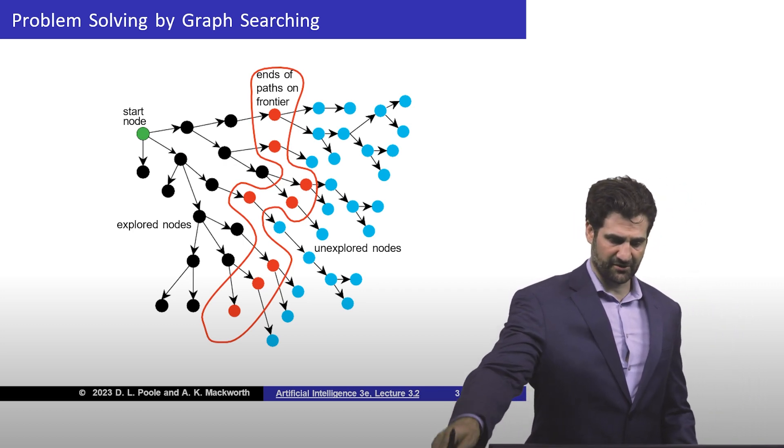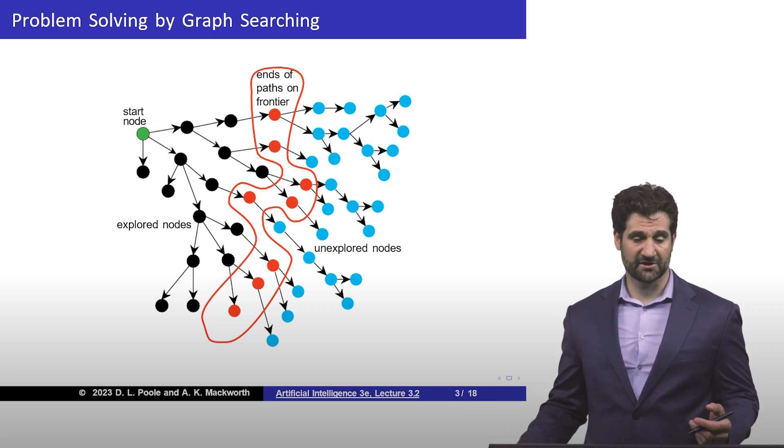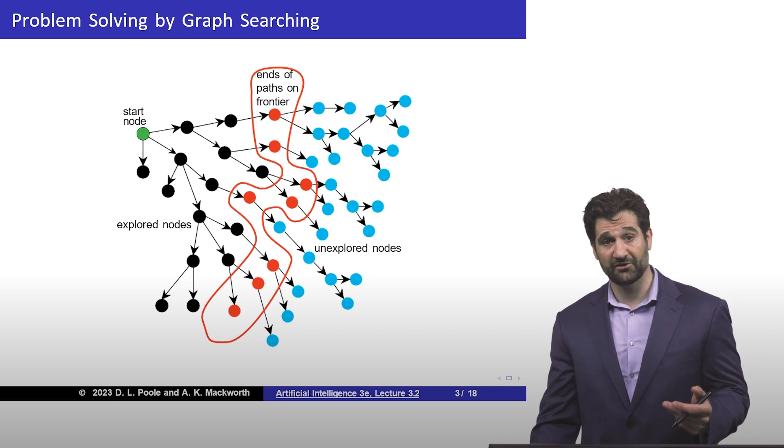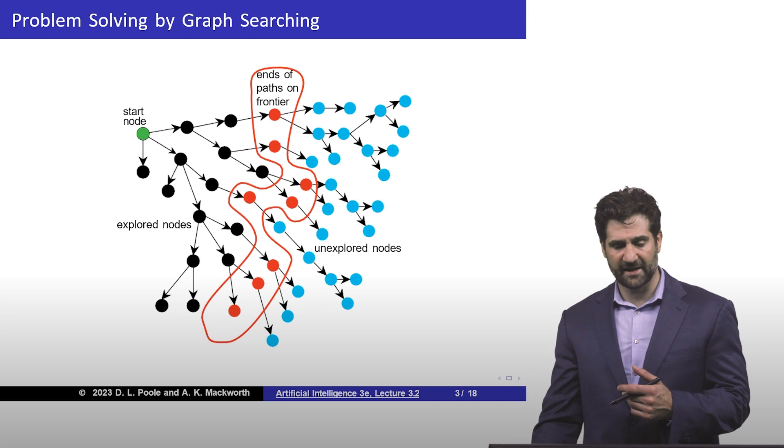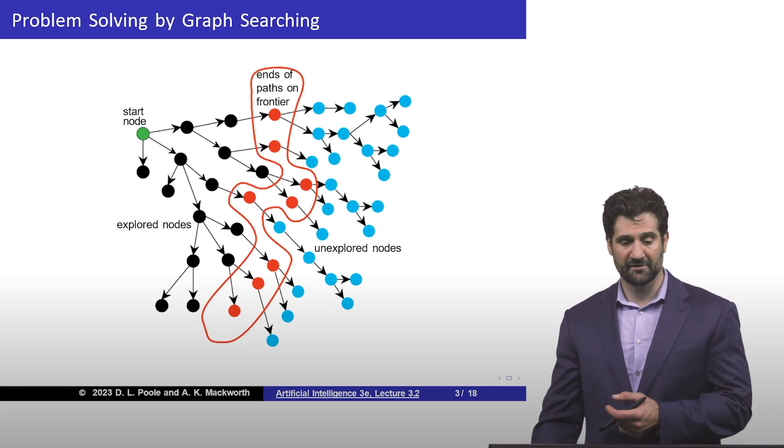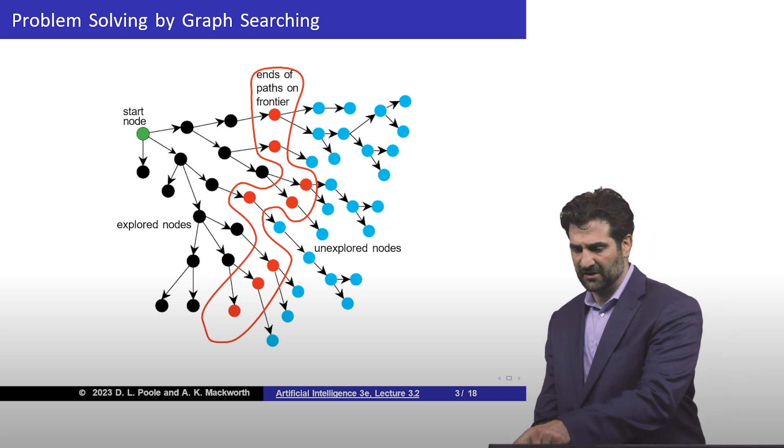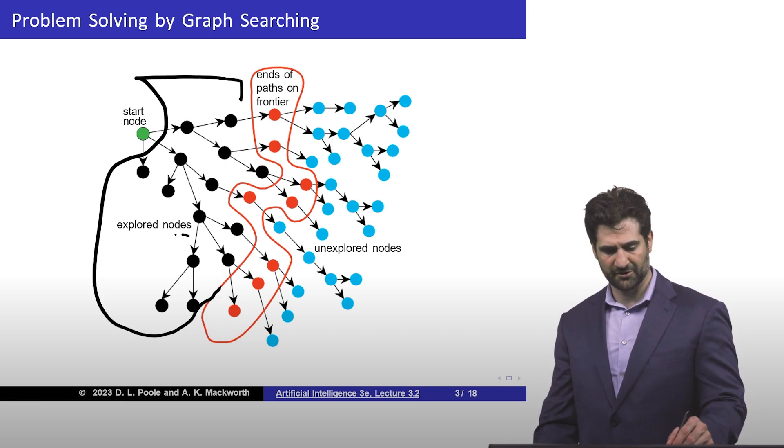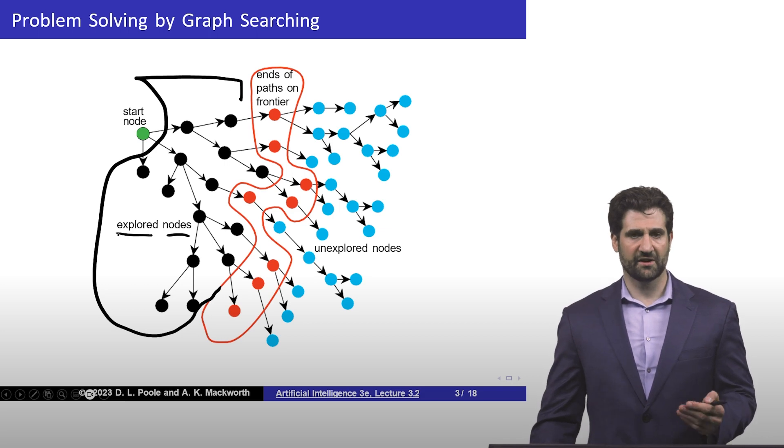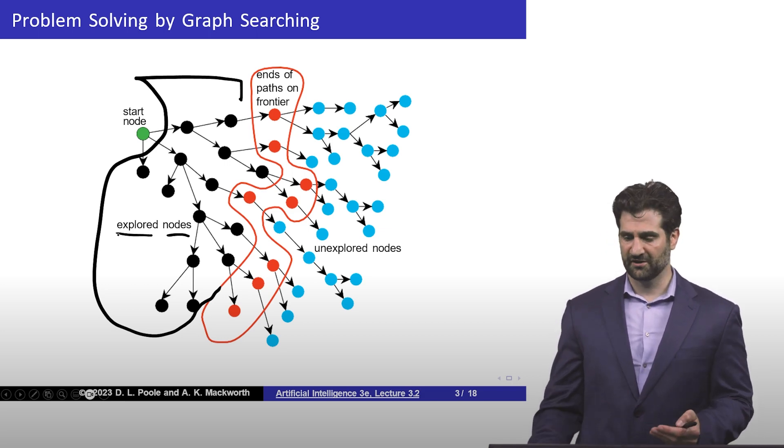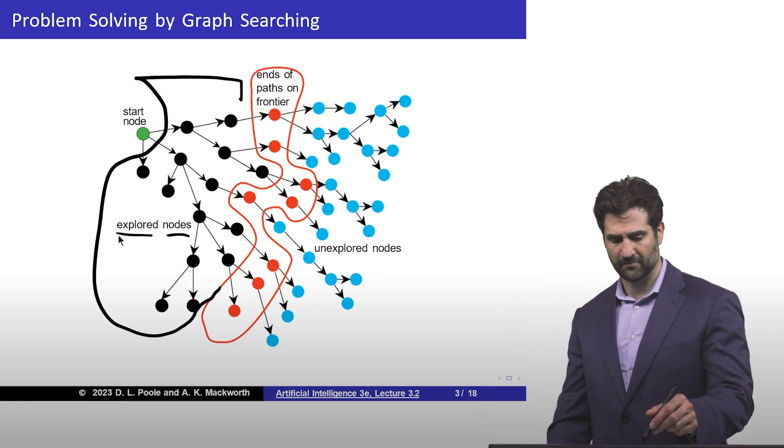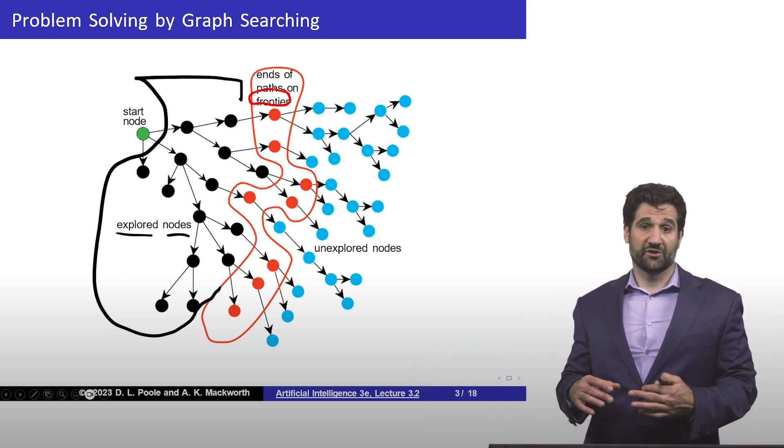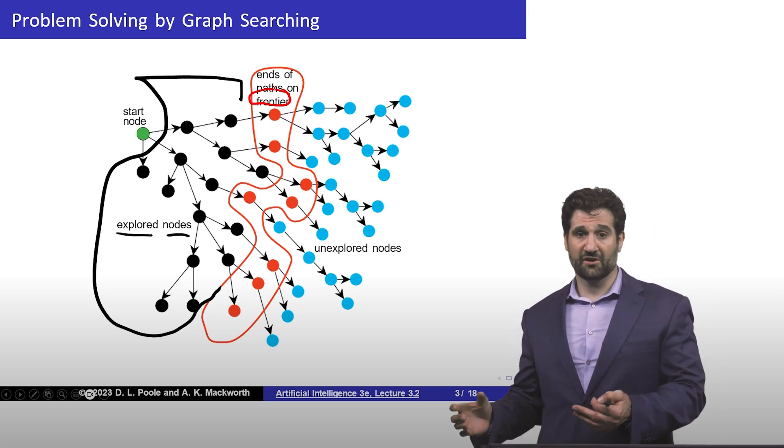To illustrate this really briefly, we have an algorithm. We start at the start node. As we drew out earlier, these are all the states. We start at the start state. As things expand out, we make decisions of what to expand next. Everything here in black are things that have already been expanded. These are the explored nodes. Things that we are considering expanding next, those are in this frontier set. Everything else is unexplored. We don't even know what they are because we haven't built out those nodes until we start expanding things in the frontier.